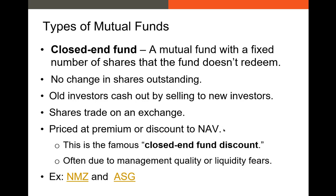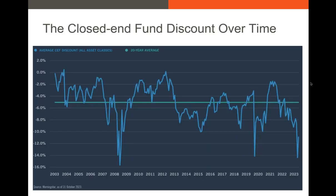One of the most important characteristics of closed-end mutual funds is that they can actually trade at a premium or a discount to the underlying value of the portfolio assets — called the net asset value, or NAV. The NAV is the total value of the portfolio held by the closed-end fund divided by the number of shares issued. Very often these closed-end funds sell at a discount to NAV. The NAV is essentially the intrinsic value of the mutual fund. One reason they're undervalued may be liquidity fears — investors worrying whether someone will be willing to buy their shares.